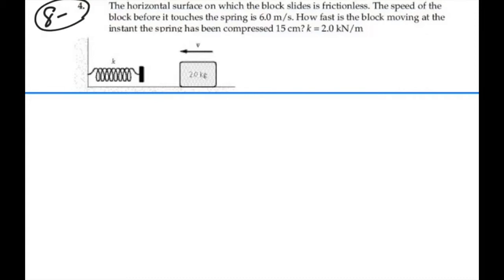Alright, so we have a k that is 2,000 newtons per meter. We have a velocity that is 6 meters per second up until it hits the spring. And we have a mass that is 2 kilograms.